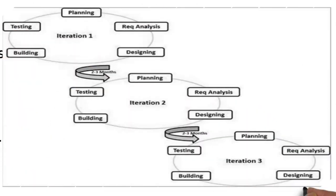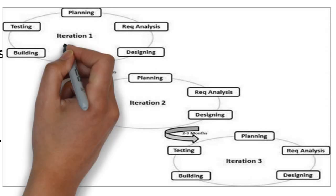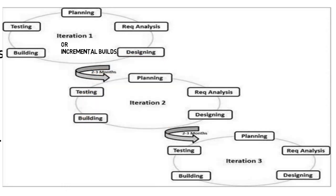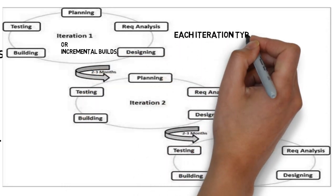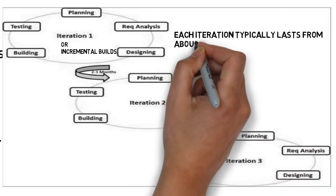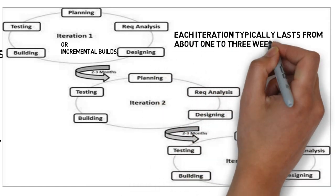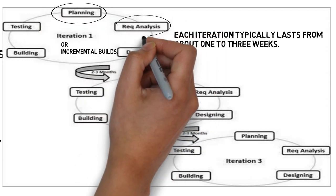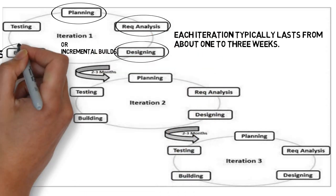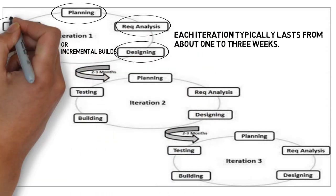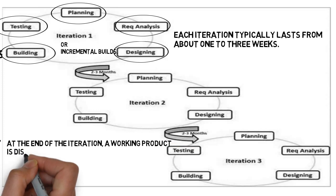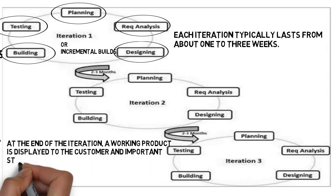Agile methods break the product into small incremental builds. These builds are provided in iterations, and each iteration typically lasts from about one to three weeks. Every iteration involves a cross-functional team working simultaneously on various areas like planning, requirement analysis, design, coding, unit testing, and acceptance testing. At the end of each iteration, a working product is displayed to the customer and important stakeholders.